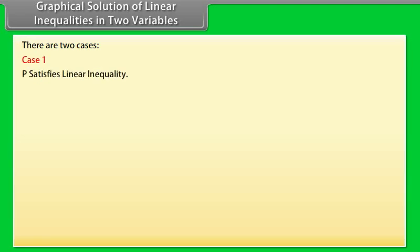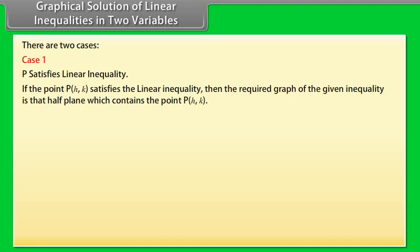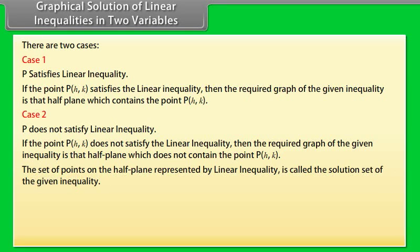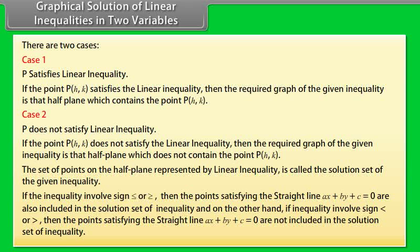Case 1: If point P(h, k) satisfies the linear inequality, then the required graph is the half-plane which contains P(h, k). Case 2: If point P(h, k) does not satisfy the linear inequality, then the required graph is the half-plane which does not contain P(h, k). The set of points on the half-plane represented by the linear inequality is called the solution set. If the inequality involves ≤ or ≥, then the points satisfying the line Ax + By + C = 0 are also included in the solution set.